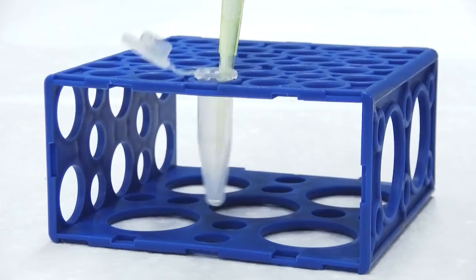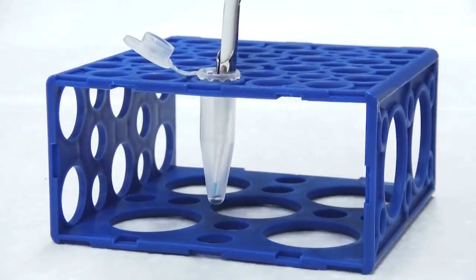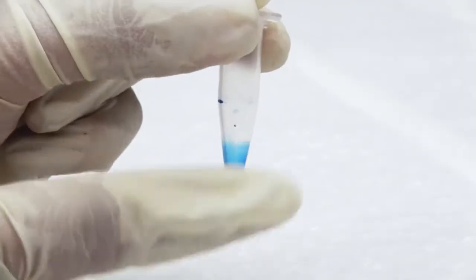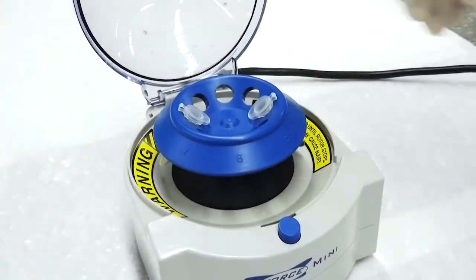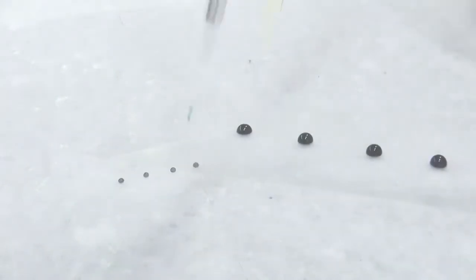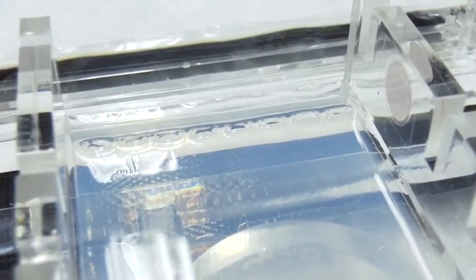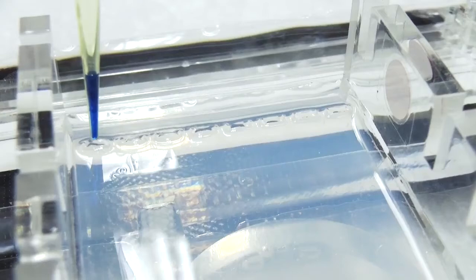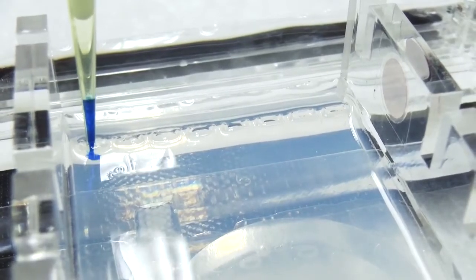Mix loading buffer into the nucleic acid sample tube and centrifuge before loading, or mix loading buffer with the nucleic acid sample on parafilm before loading. Load the samples into the wells. Be careful not to poke the gel.